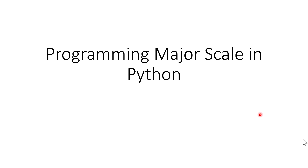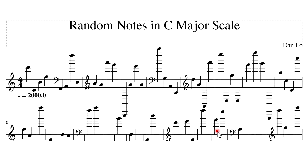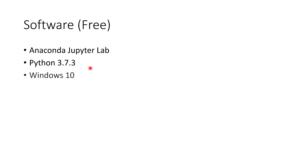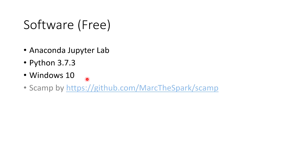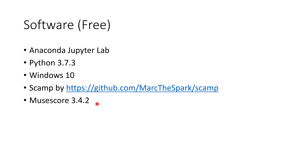My name is Dan Lowe. In this video I'm going to show you how to write a program to generate random notes in C major scale or other keys like a D key, for example, in Python. At the end of the video you should be able to generate music. I use Jupyter Lab, Python 3.7, running on Windows 10, and I use the scamp package. I also use MuseScore to generate PDFs.